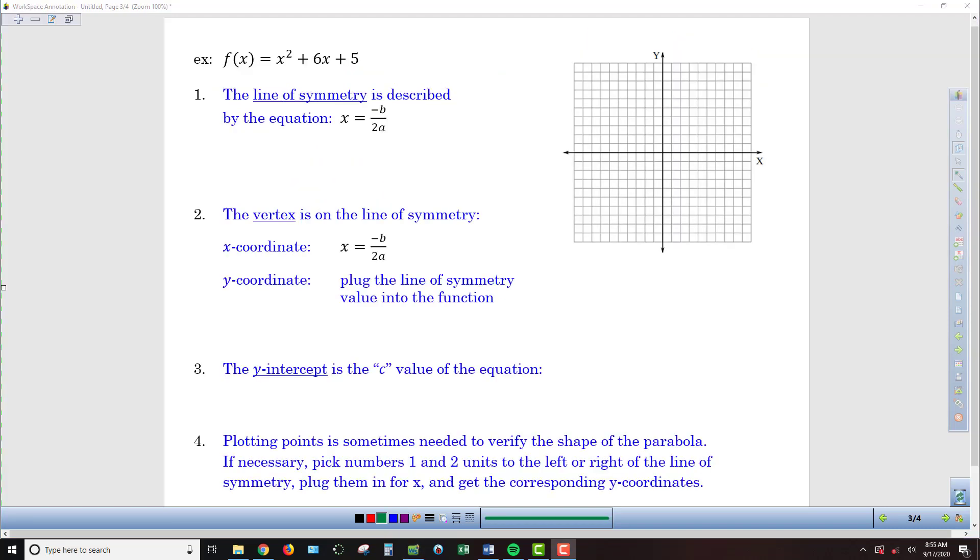Let's put those steps into practice with the example in front of us here. We have f(x) = x² + 6x + 5. The first thing we want to do, like we listed off, was to find that line of symmetry, the line that's going to cut our graph into two equal parts, run right down the middle, that the vertex will be located on.